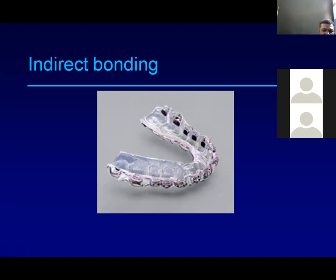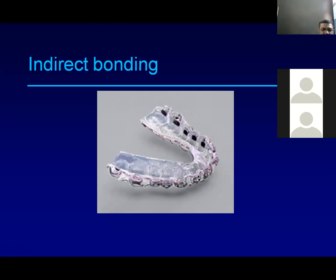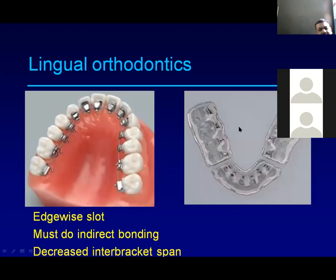The advantage of indirect bonding is that you can place the bracket exactly on the facial axis of a particular tooth. In direct bonding, while you can bond well on the right side with direct vision, on the left side you must use indirect vision through a mirror. If the angle is not perfect, you cannot bond on the exact axial point — there may be mesial, distal, incisal, or gingival errors. Indirect bonding prevents this problem.